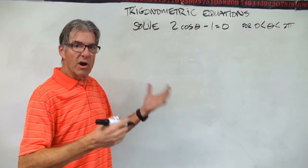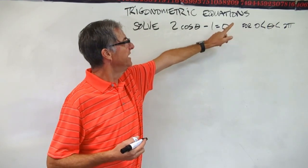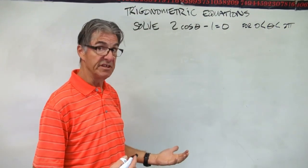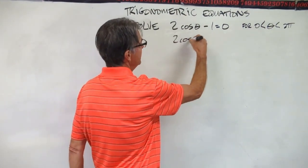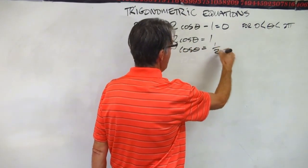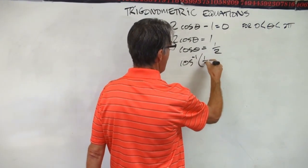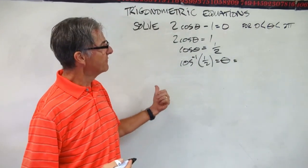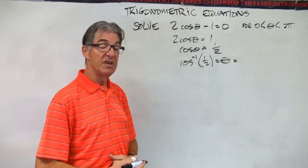Now let's do a little more algebra with trigonometric equations. We have 2 cosine theta minus 1 equals 0, and we're going to solve for theta between 0 and 2 pi. Move 1 over: 2 cosine theta equals 1. Divide by 2: cosine theta equals 1/2. Take the inverse cosine of 1/2. Pull out your calculator, find theta, then find the other values of theta between 0 and 2 pi and put your values in radians.